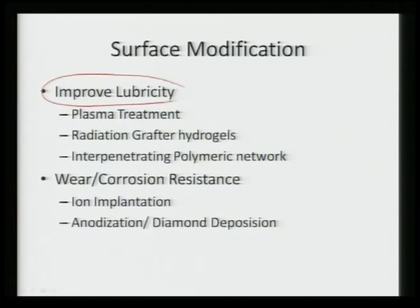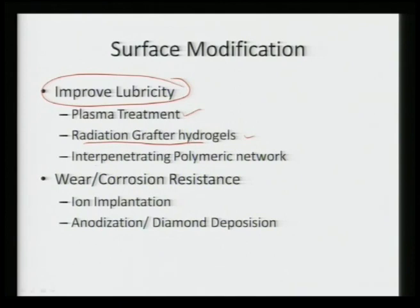In certain regions, we want to improve lubricity — for example, in joints — to enhance lubricity so that mating surfaces undergo minimum friction. We can apply certain plasma treatments, radiation-grafted hydrogels, or something called an interpenetrating polymeric network, in order to supply lubricants for reducing overall friction between two mating or adjoining surfaces.